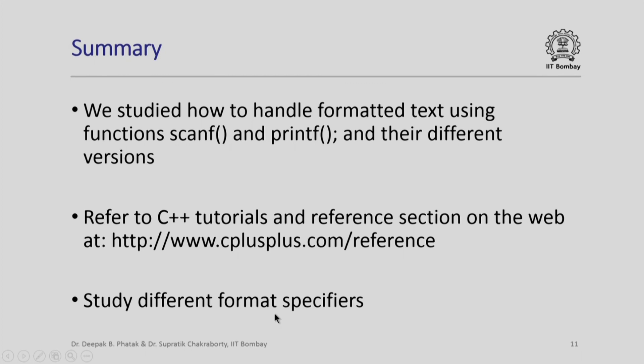In summary, we studied how to handle formatted text using the functions scanf and printf and their different versions. Please refer to C++ tutorials and the reference section on the web, as this contains a complete description of all format specifiers. We note that scanf and printf have variations called sscanf and sprintf for handling input and output to a string, and fscanf and fprintf for handling input and output from text lines in files. In subsequent sessions, we shall use this feature to read large amounts of data from a text file and produce binary files. Thank you.